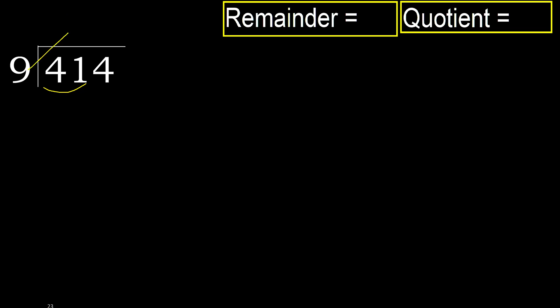9 multiplied by which number is nearest to 41 but not greater? 9 multiplied by 5 is 45, which is greater. 9 multiplied by 4 is 36, which is not greater. Subtract: 41 minus 36 is 5.